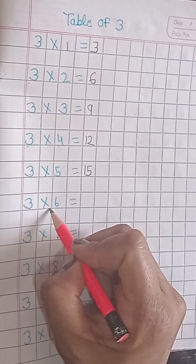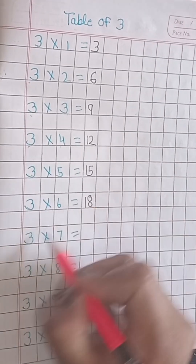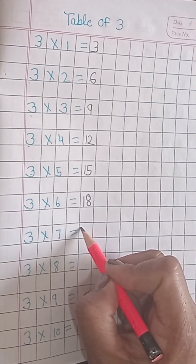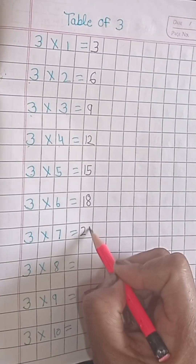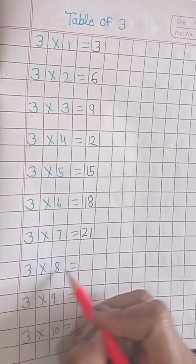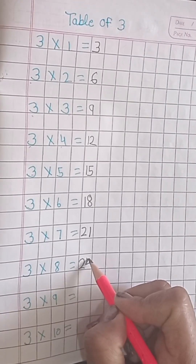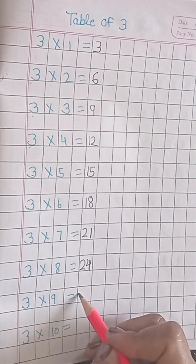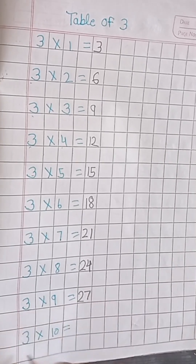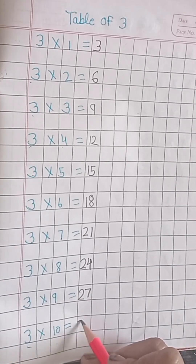Three sixes are eighteen. Three sevens are twenty-one. Three eights are twenty-four. Three nines are twenty-seven. Three tens are thirty.